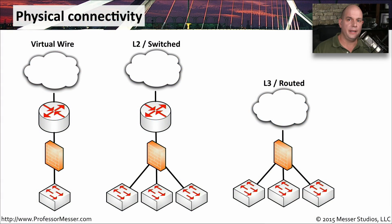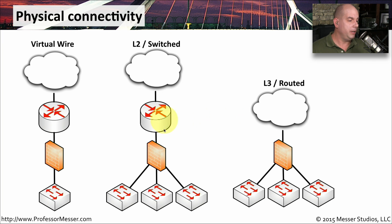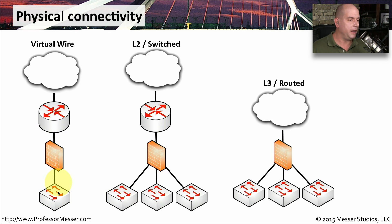There are a lot of different ways you can connect your firewall to the network. You need to have your firewall between you and the outside world, or between you and the data that needs to be protected. The firewall is represented here as the brick wall. We have switches at the bottom, and the arrows pointing into and away from each other are the routers on our network.